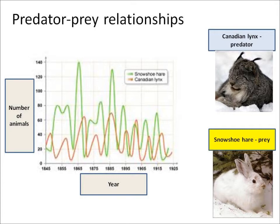This is about predator-prey relationships. Prey is the animal being hunted — in this case the snowshoe hare — and the predator is the animal doing the hunting, looking to eat the prey, and in this case that's the Canadian lynx.